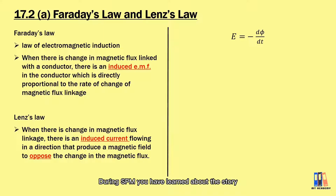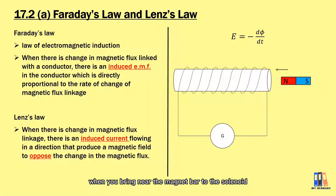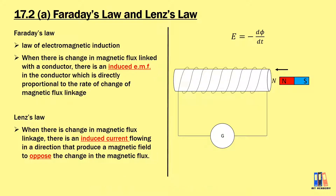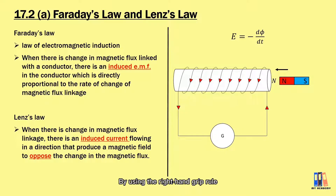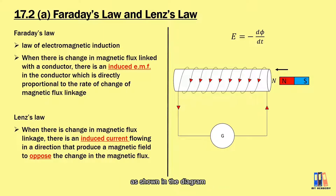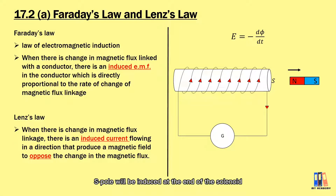During SPM, we learned about the interaction between a solenoid and a moving bar magnet. For example, when we bring the bar magnet near the solenoid, there will be an induced current in the solenoid that produces a pole at the end of the solenoid to repel the magnet away. Using the right-hand grip rule, you can obtain the directions of the current as shown in the diagram. In the other way around, when the magnet is pulled away from the solenoid, the opposite pole is induced at the end of the solenoid to pull back the bar magnet.